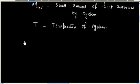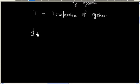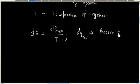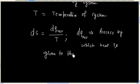So, we have dS equals dq_reversible divided by temperature. Here, reversible means the process by which the heat is given to the system is a reversible process. So dq_reversible means the process by which the heat is given to the system is reversible.